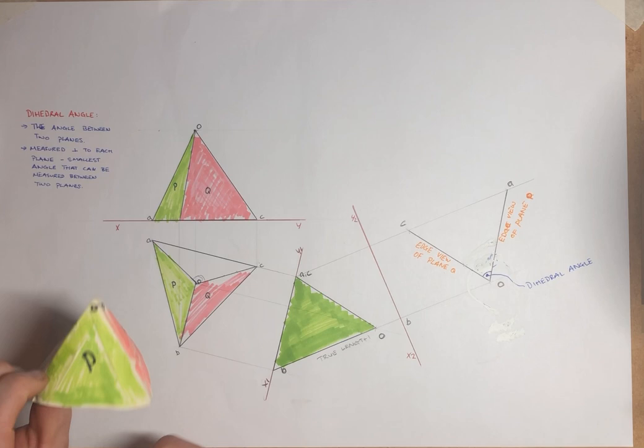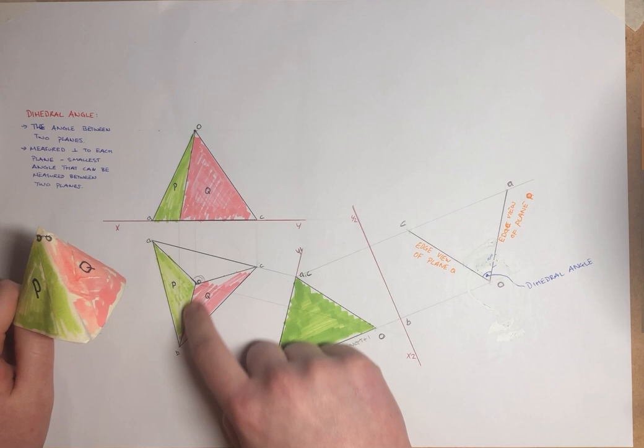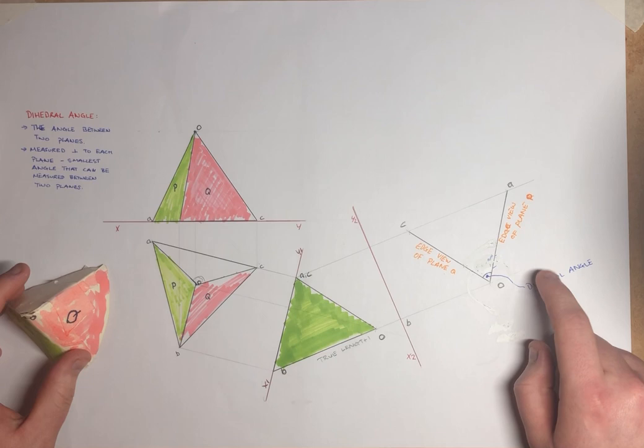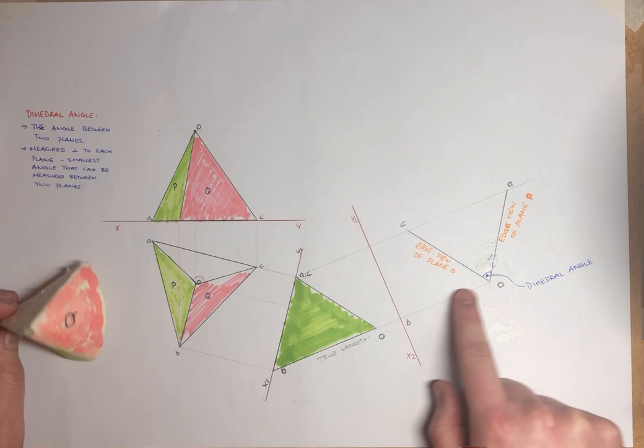So remember what we're trying to get is our dihedral angle. So we're trying to intersect these two surfaces, P and Q. So now we've actually formed our dihedral angle. So we have here C to O. That would be here.